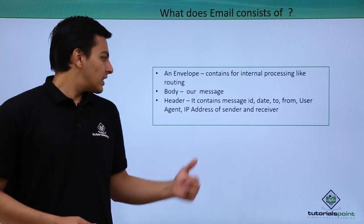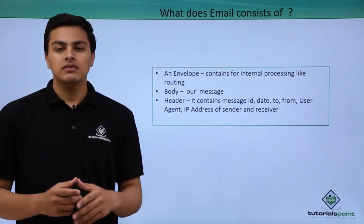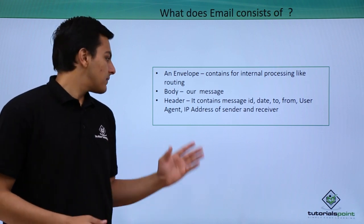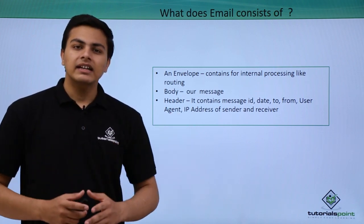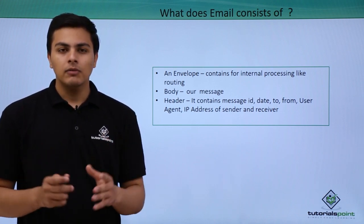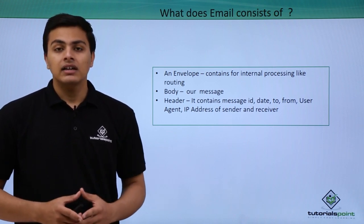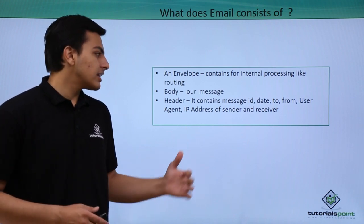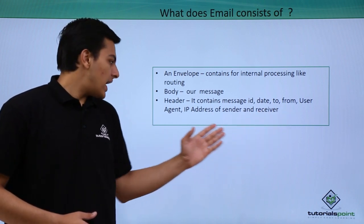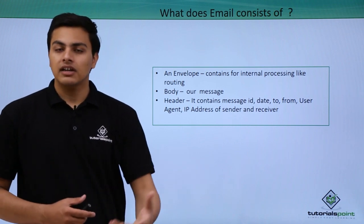The email body consists of our message which we see. The next part of the email is the email header, which contains interesting information that one can use to find out where the email came from and what the IP address of that sender is. The email header consists of message ID, date, to, from, user agent, and the IP address of the originated server or the IP address of the receiver.